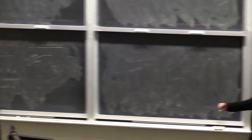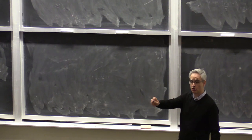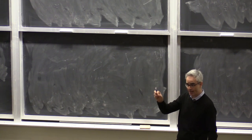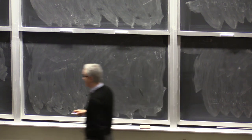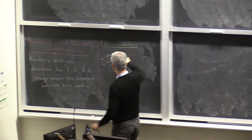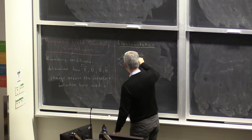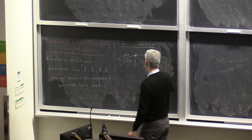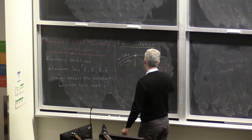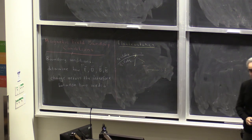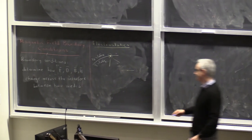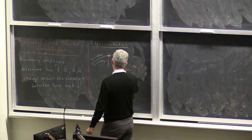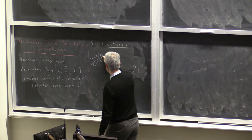Boundary conditions are just like the boundary conditions you use in partial differential equations in mathematics—they are point-wise conditions. So if I pick a point at the interface and focus around that point, exaggerating this area, I draw the local tangent, and around this point I have basically a planar interface between the two media.